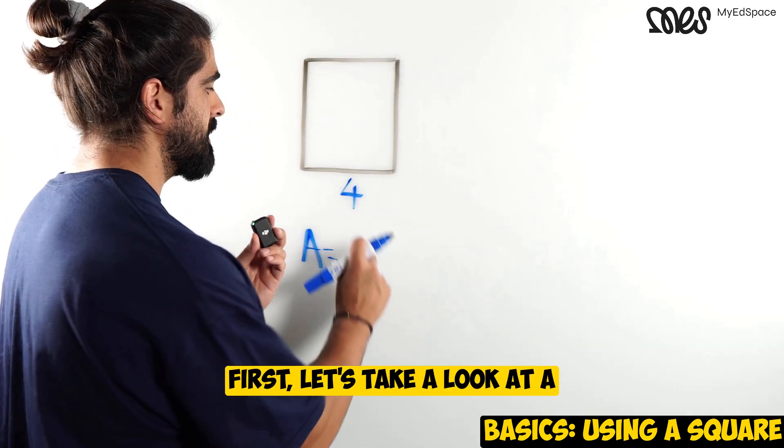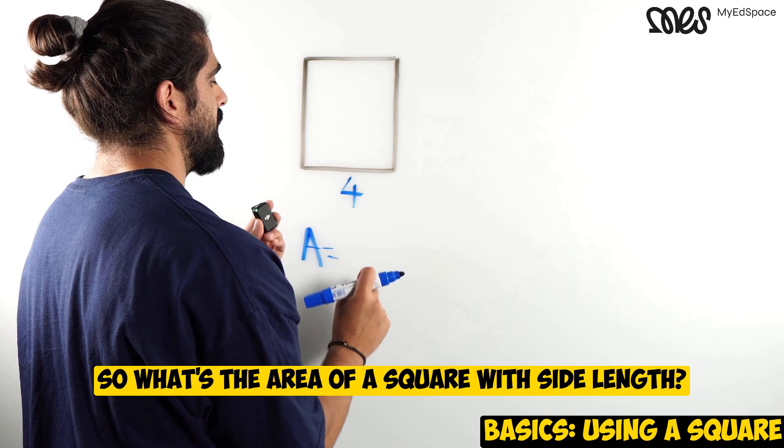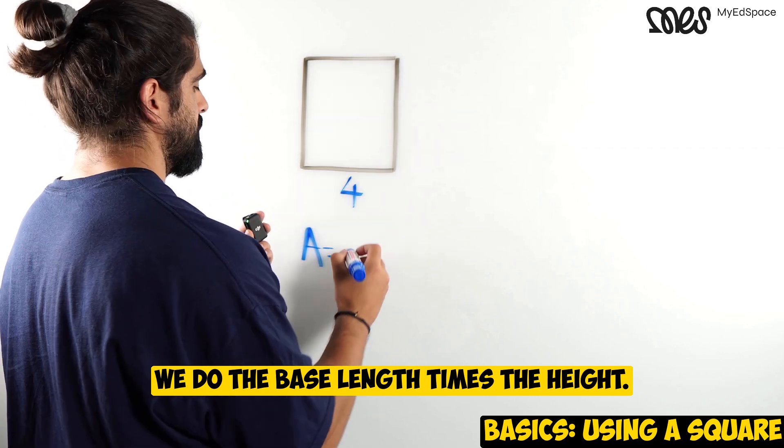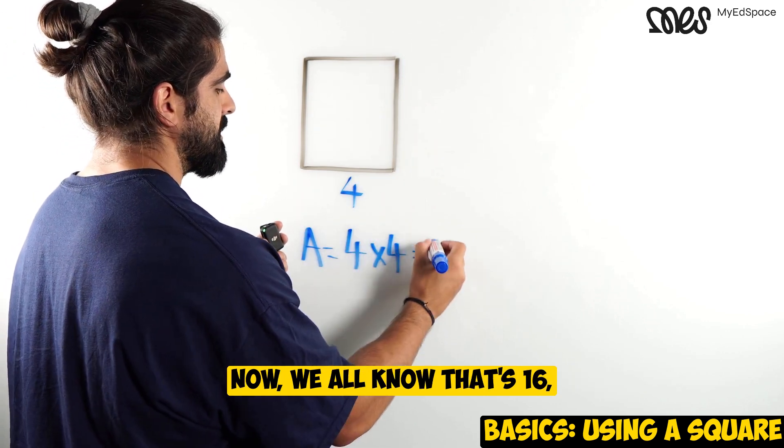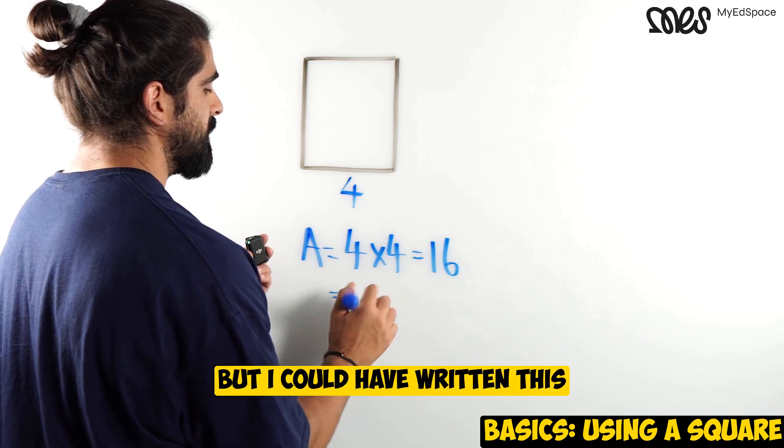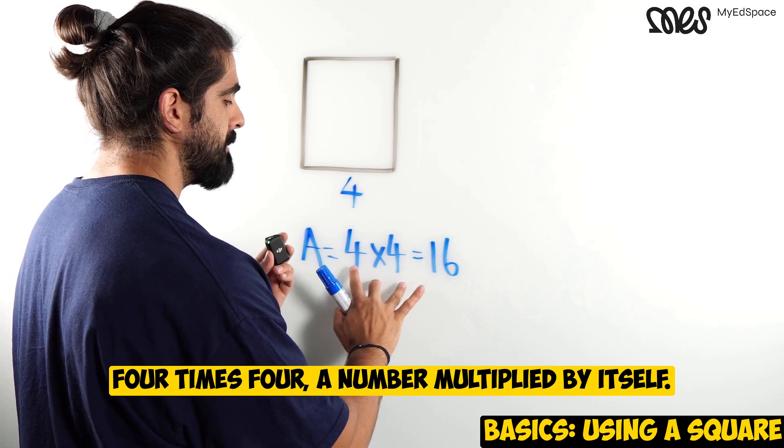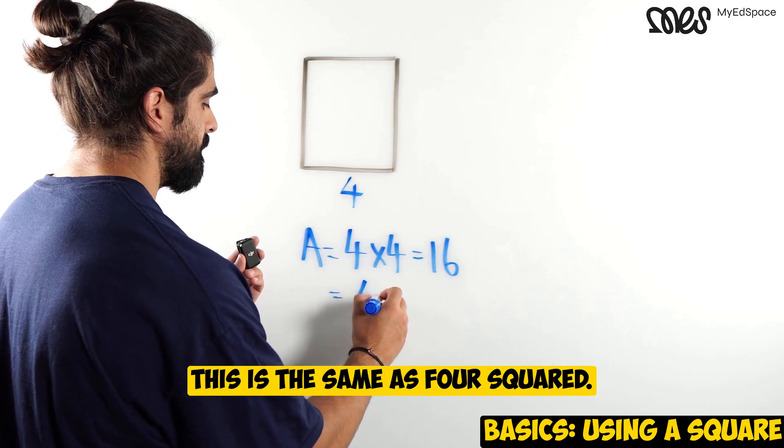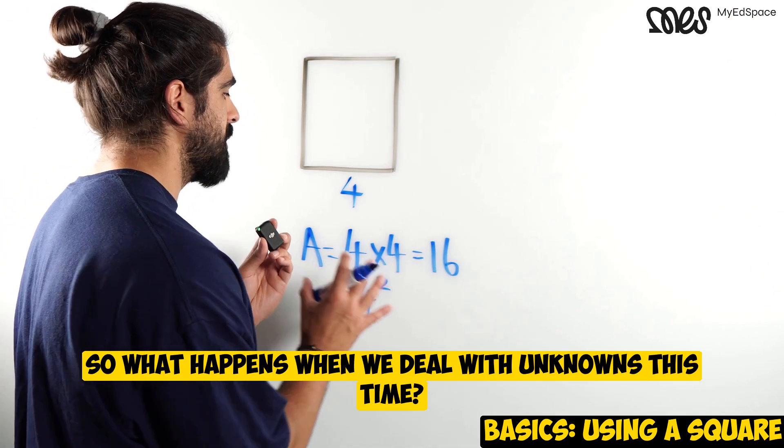How about areas? First, let's take a look at a real example with a number. So what's the area of a square with side length 4? Well, you should know that we do the base length times the height. So we do 4 times 4. Now, we all know that's 16. But I could have written this 4 times 4, a number multiplied by itself. We should be thinking about indices. This is the same as 4 squared.